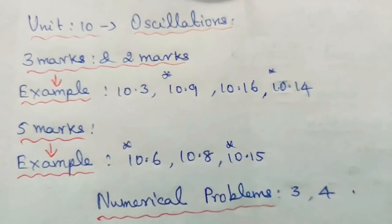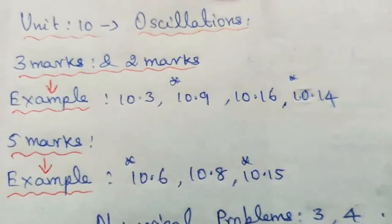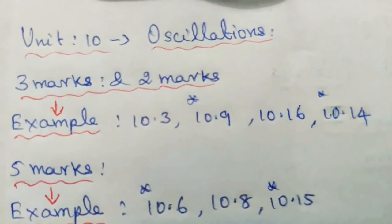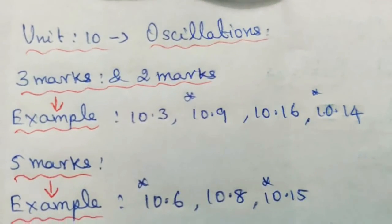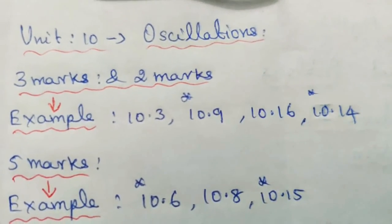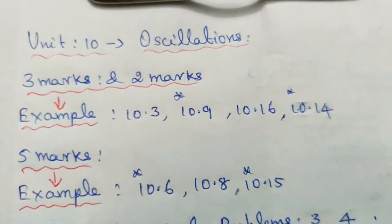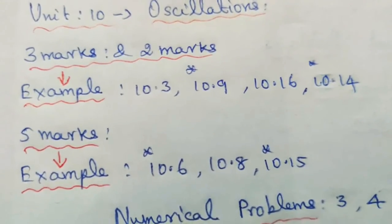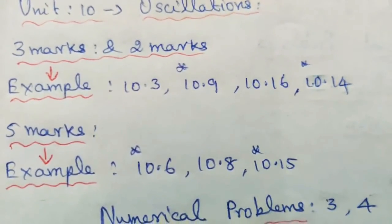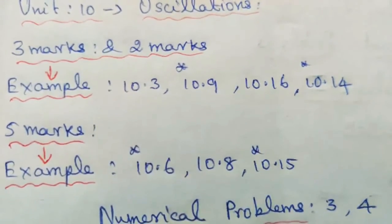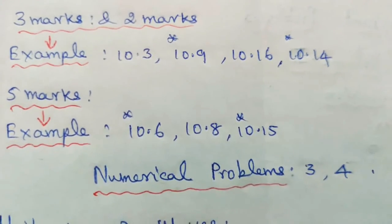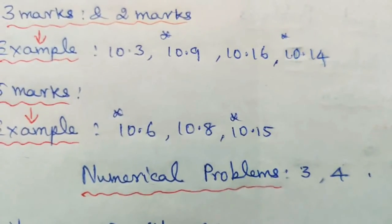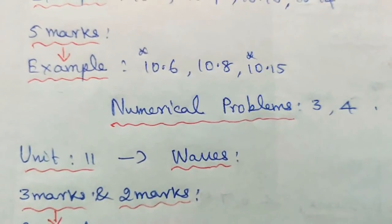Unit 10: Oscillations — 3 marks and 2 marks problems. Example problems: 10.3, 10.9, 10.16, and 10.14. 5 marks example problems: 10.6, 10.8, and 10.15. Numerical problems: 3 and 4.